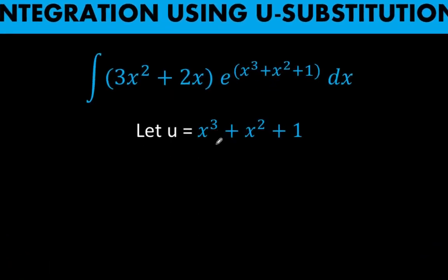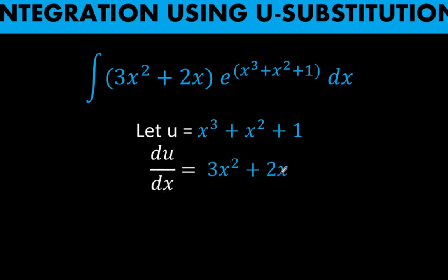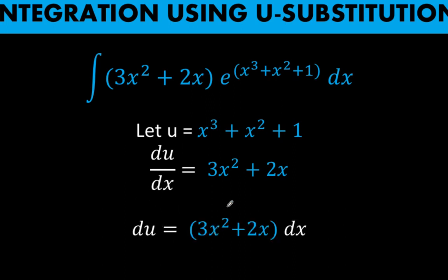In the u-substitution, we let x cubed plus x squared plus 1 be equal to u. Getting the derivative of u with respect to x, we have 3x squared plus 2x. In u-substitution, we pretend that the differential du and the differential dx are the numerator and denominator of a fraction. So we can solve for du by multiplying both sides by dx to get du equals (3x squared plus 2x) dx.